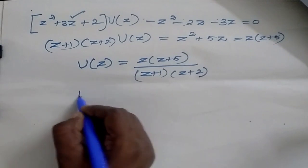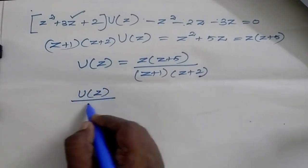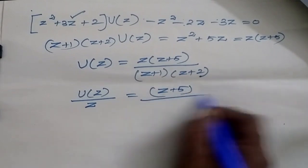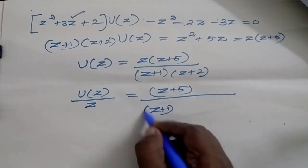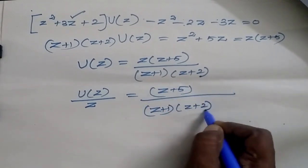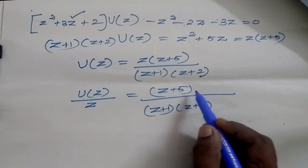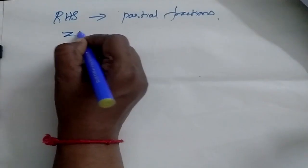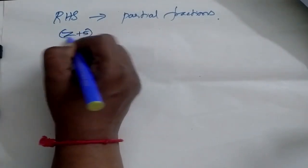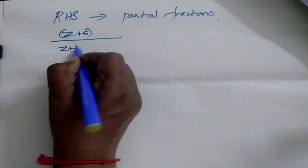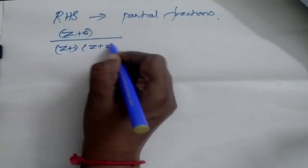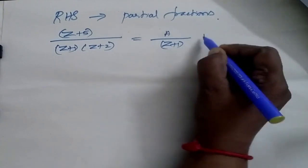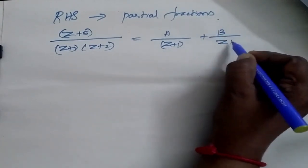Now bring this z to this side. So U(z)/z is equal to (z+5) divided by (z+1)(z+2). Now I am going to simplify this RHS using the partial fraction method. So (z+5) divided by (z+1)(z+2) is equal to A/(z+1) plus B/(z+2).